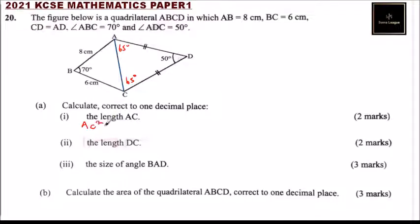AC squared is equal to 8 squared plus 6 squared minus 2 multiplied by 8 multiplied by 6 times the cosine of 70 degrees. Using your calculator, you'll be able to get 8.2 centimeters. So this means that this side is 8.2 centimeters. It is good you put it there so that you can be able to answer the other questions.